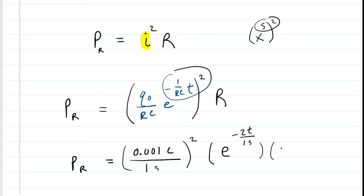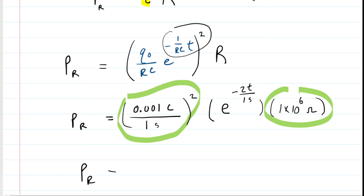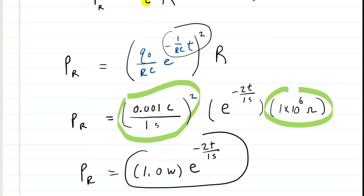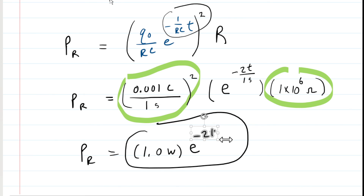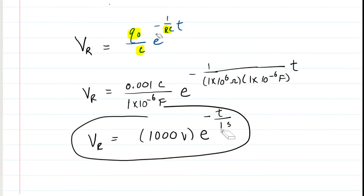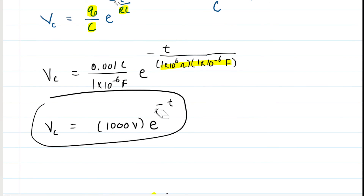Multiplying the leading coefficient by the resistance gives 1 watt. So the power is 1 watt times e to the negative 2t over 1 second. One final note: since we are dividing by 1 second, it doesn't change the value, so the exponent can be written simply as negative 2t. Similarly, the expressions for V_C and V_R can be written as e to the negative t. This is the answer to Part E.